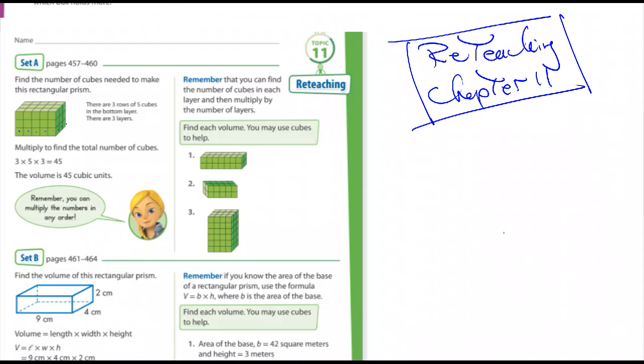They've done that there: three times three times five, or three times five times three, and it's going to be 45. They label it 45 cubic units.